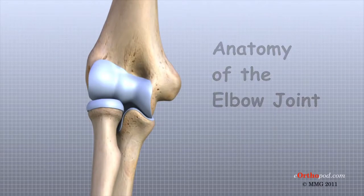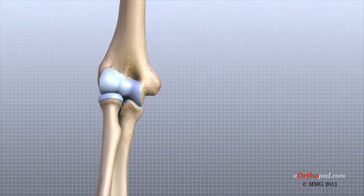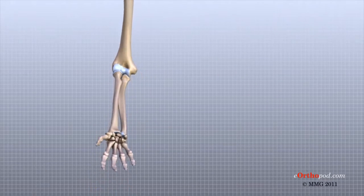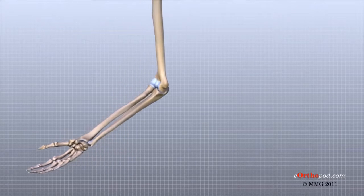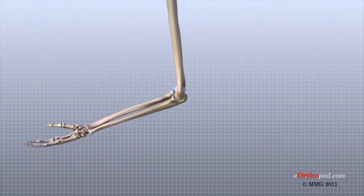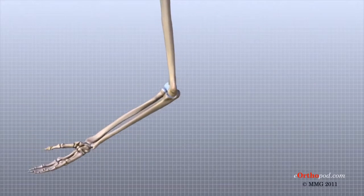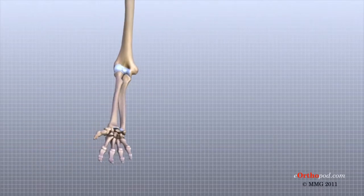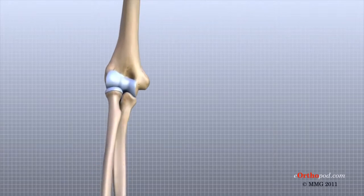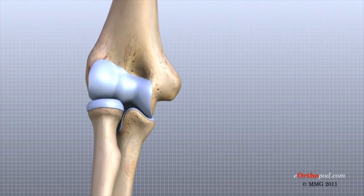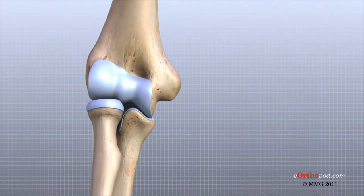At first, the elbow seems to work like a simple hinge, but the elbow is a complex joint whose motion affects the forearm and the wrist joint. It is easy to see why the elbow can cause problems when it does not function correctly.